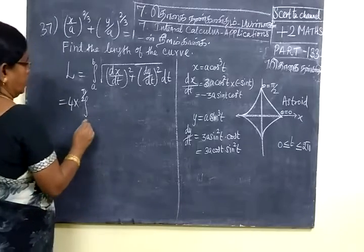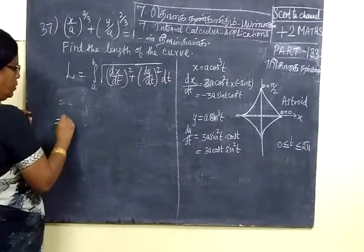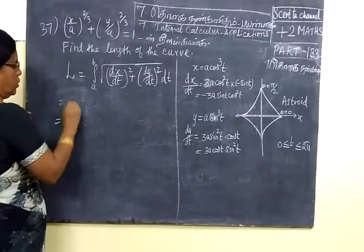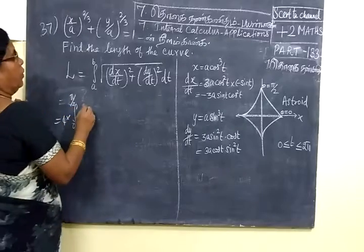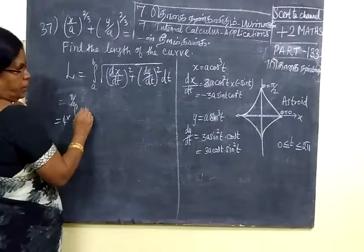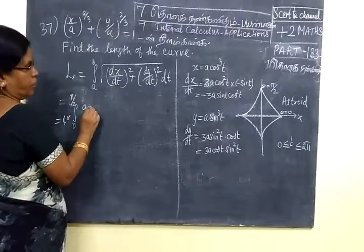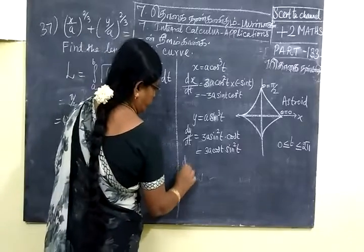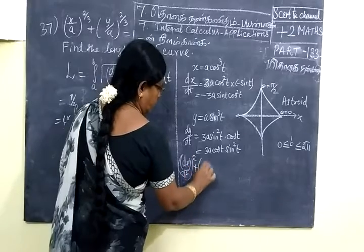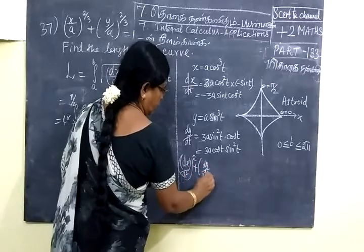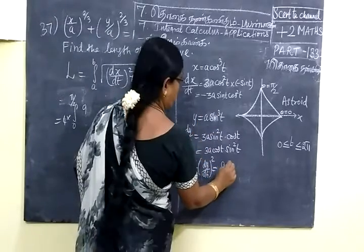Now we substitute here. So the length of the curve is equal to 4 into integral 0 to π/2. Now we substitute dx/dt whole square. Whole square 9a².